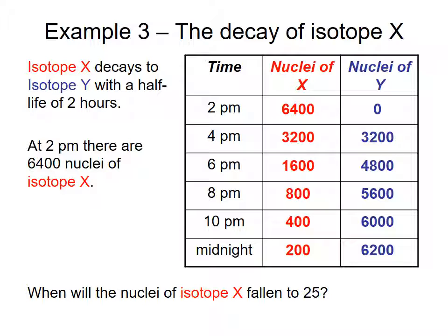So when will the nuclei of isotope X end up falling to 25? It will take a total of six hours at 6 a.m.